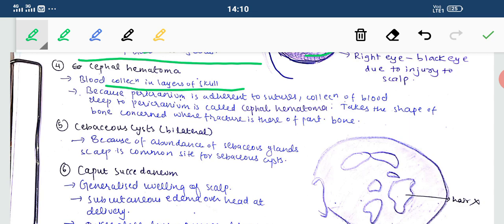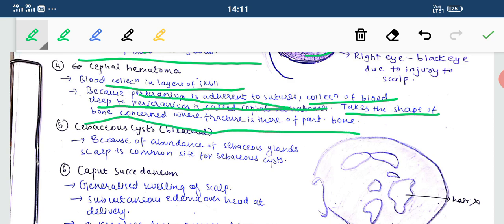Now the fourth part is cephal hematoma. Blood collection in the layers of the skull is known as cephal hematoma. Hematoma means mass or collection in the cephalic region of the skull. Because pericranium is adhering to the sutures, collection of blood deep to the pericranium is called cephal hematoma. It takes the shape of the bone covered where the fracture is there. Basically, remember the collection of blood into the layers of the skull is cephal hematoma.